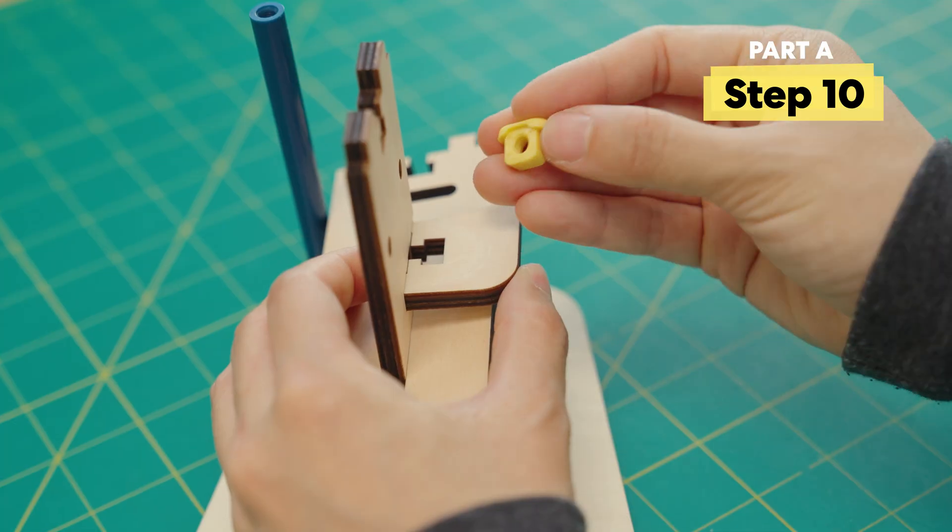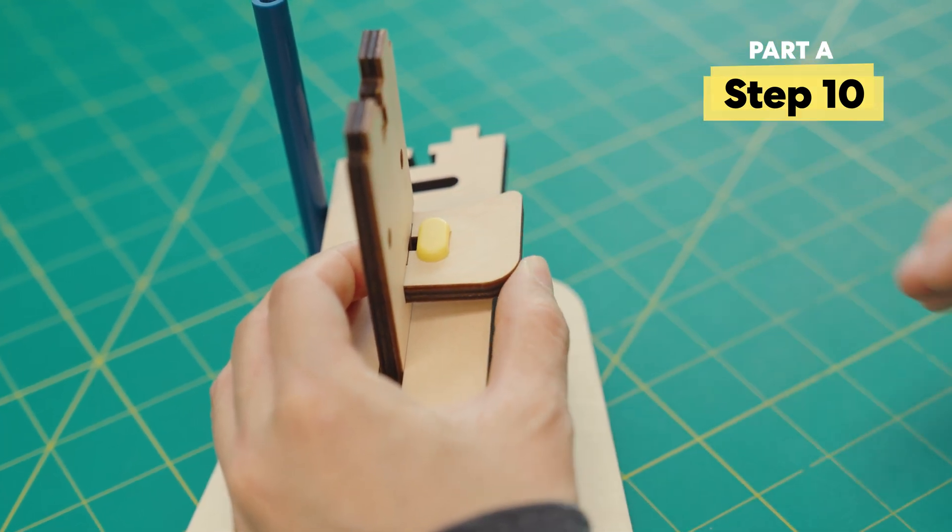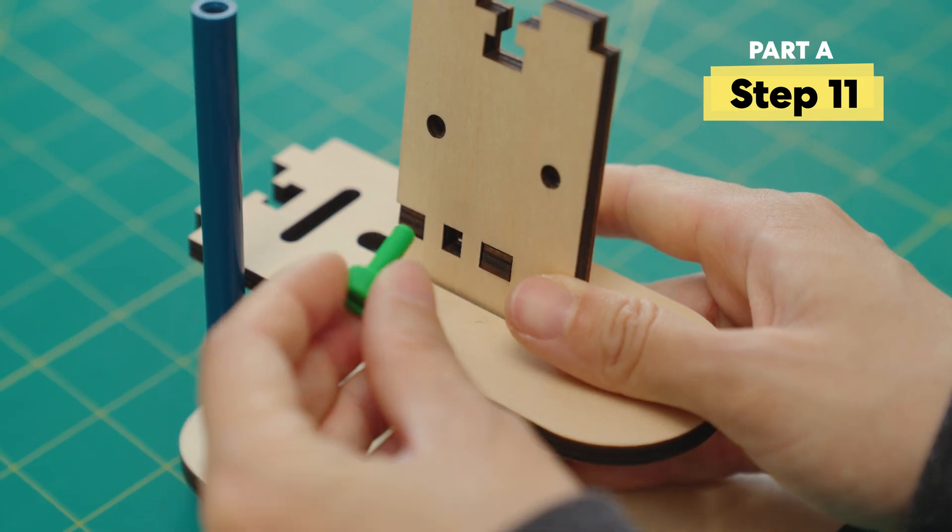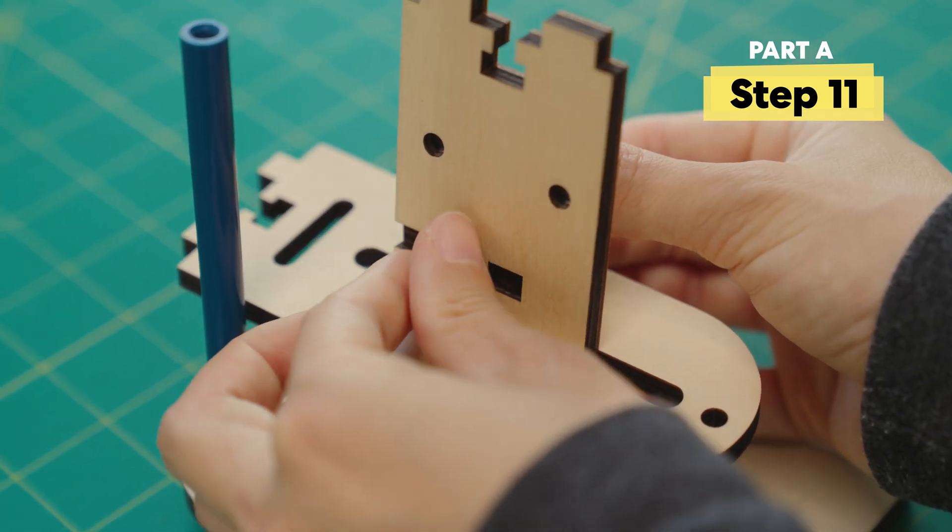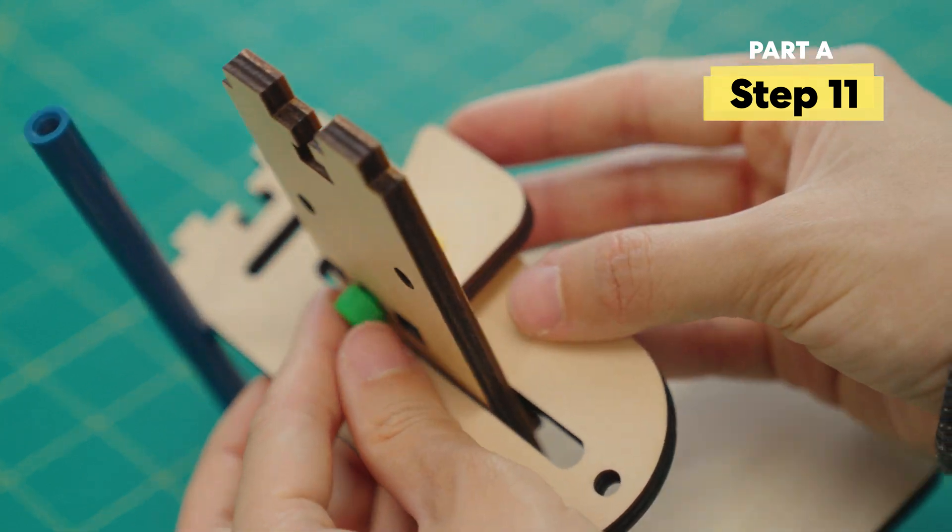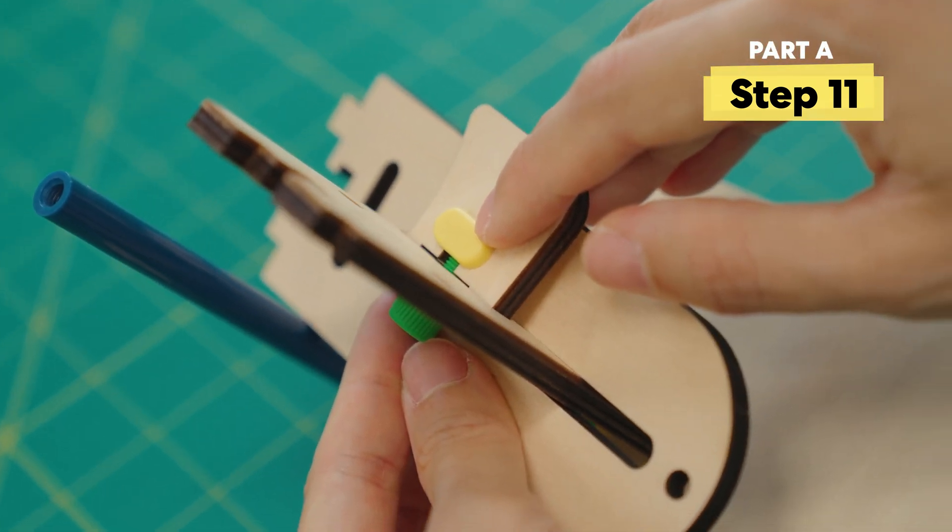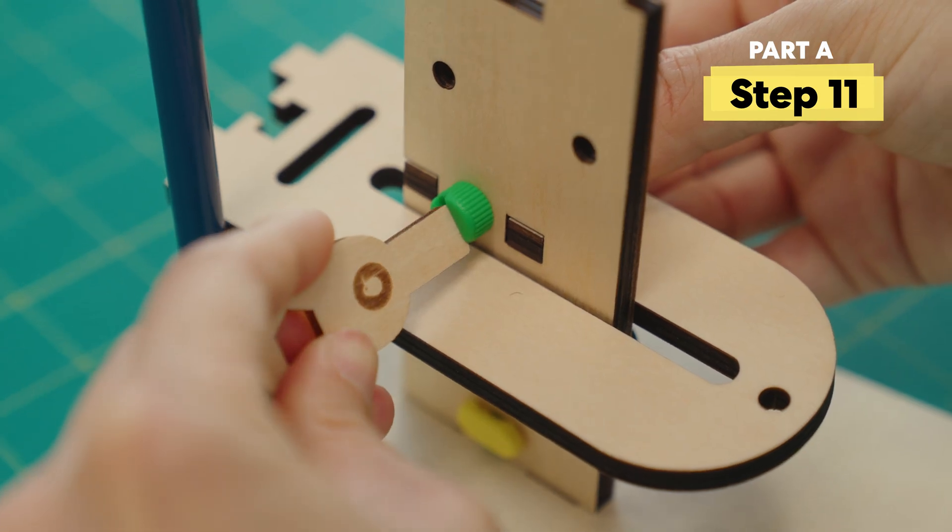We'll use a T-clip to hold this in place. Next, twist a bolt through here. Make sure it connects with the T-clip. You can use the multi-tool to twist on the bolt.